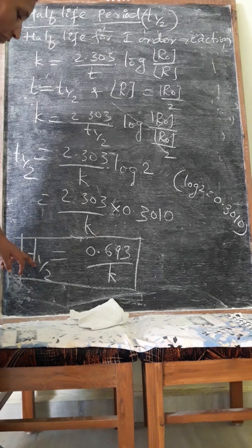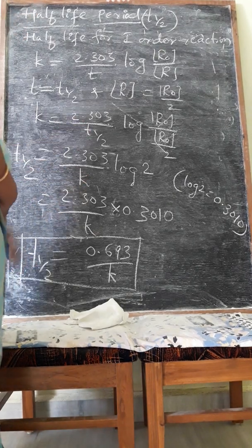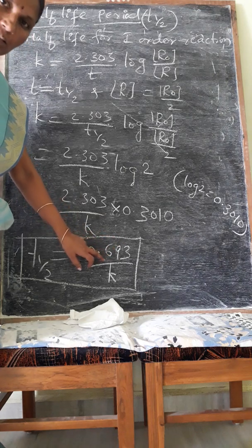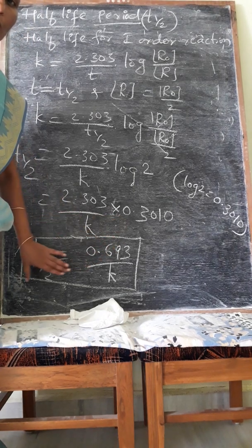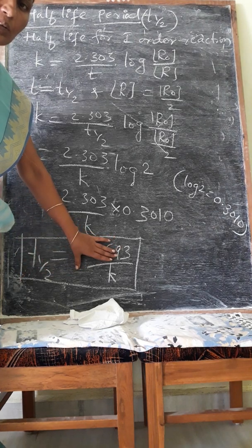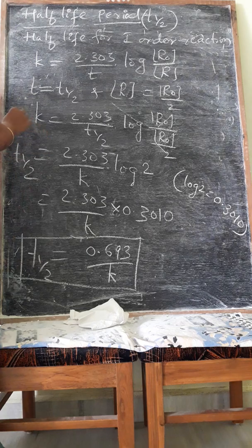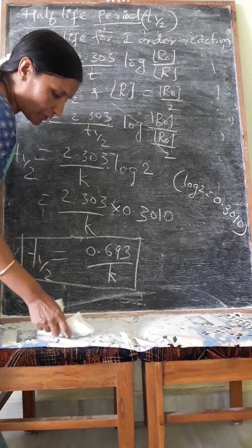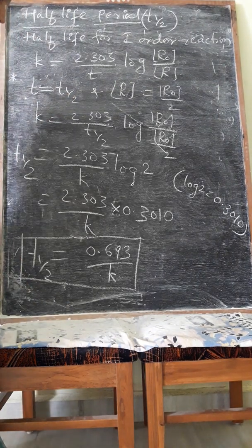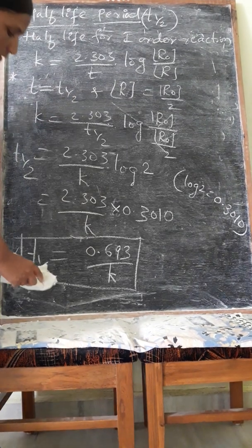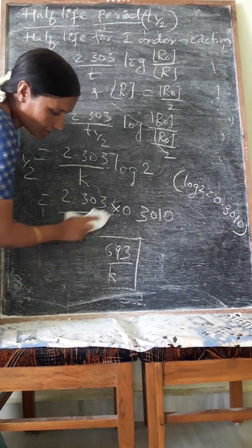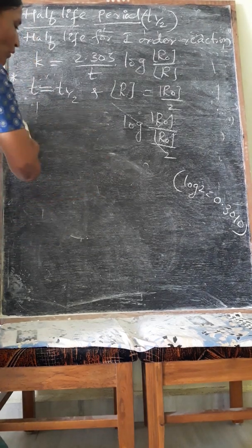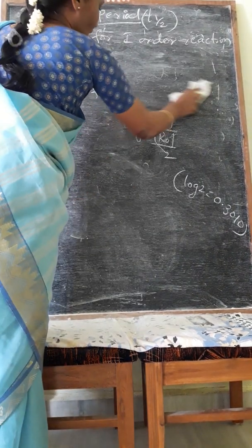Notice that the half-life of a first-order reaction contains no initial concentration term. Hence, the half-life of a first-order reaction is independent of its initial concentration. One important exam question is: derive or prove that the half-life period for a first-order reaction is independent of initial concentration. We will now solve some problems using this formula.